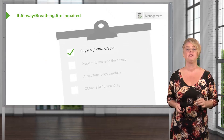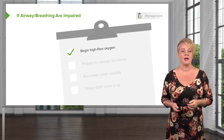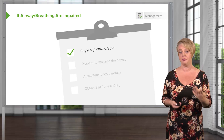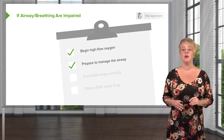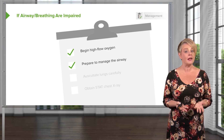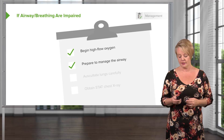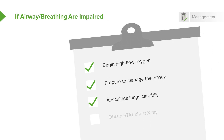Anytime you suspect a problem with A and B, start off by giving them high-flow oxygen — that's going to address hypoxia and hopefully reduce their work of breathing. Be ready to manage the airway; not every patient needs to be intubated right now, but you want the necessary equipment, medications, and personnel available. Auscultate the lungs — this helps narrow your differential. If your patient is wheezing, you'll manage them differently than if they have crackles or unilaterally absent breath sounds. Lastly, get a stat chest x-ray for any patient with respiratory distress.